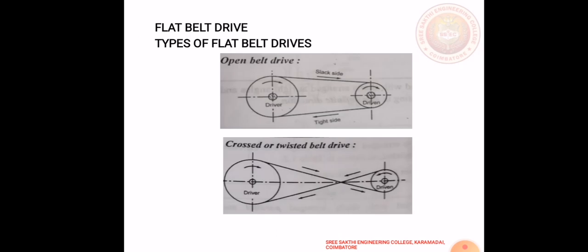What is a flat belt? Flat belts are a simple system for power transmission. They can deliver high to moderate power over a distance of up to 15 meters. They have different types of belt drive arrangements.